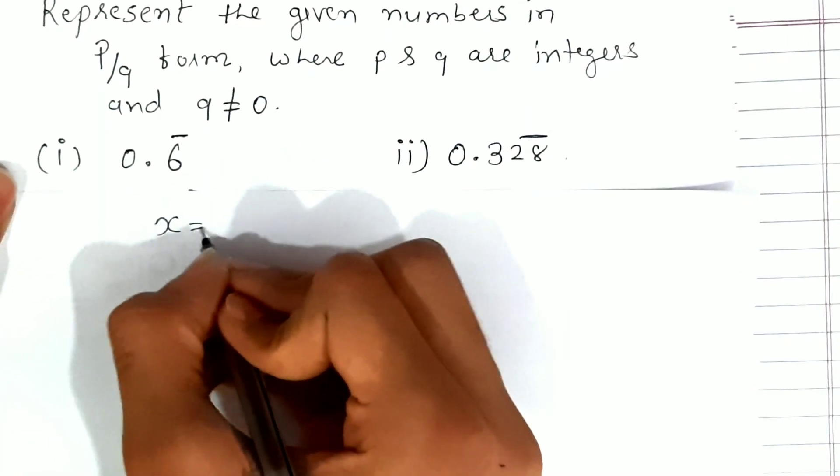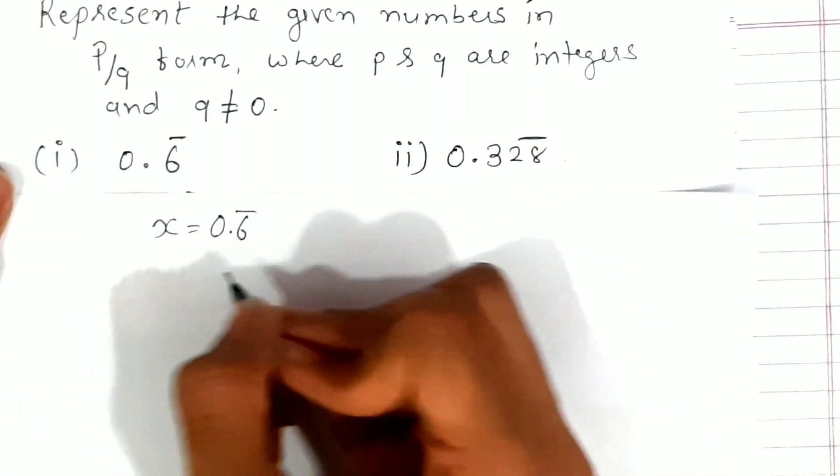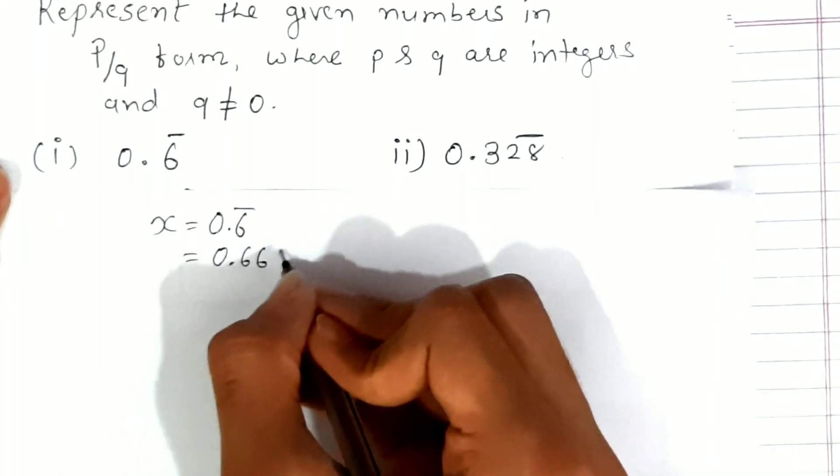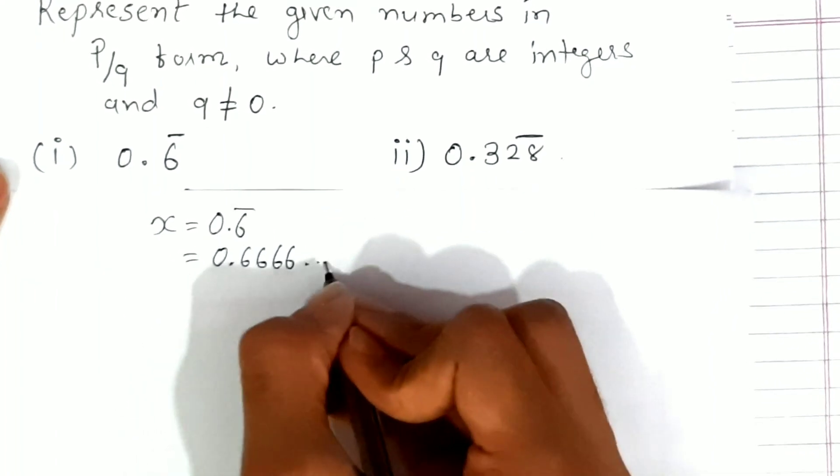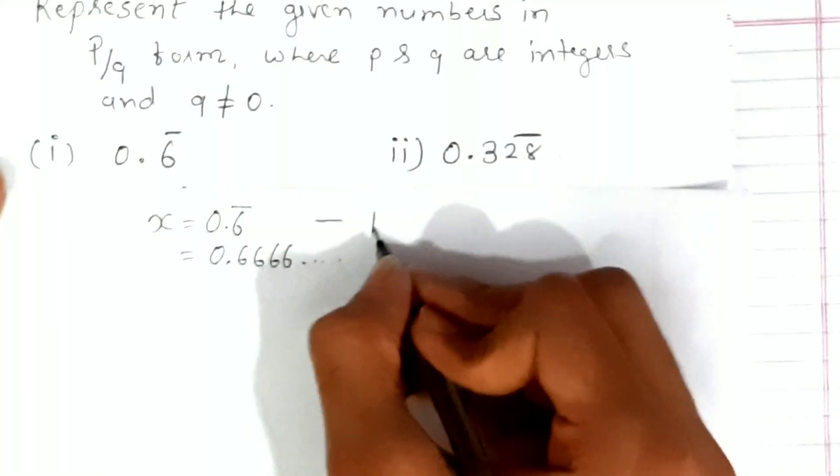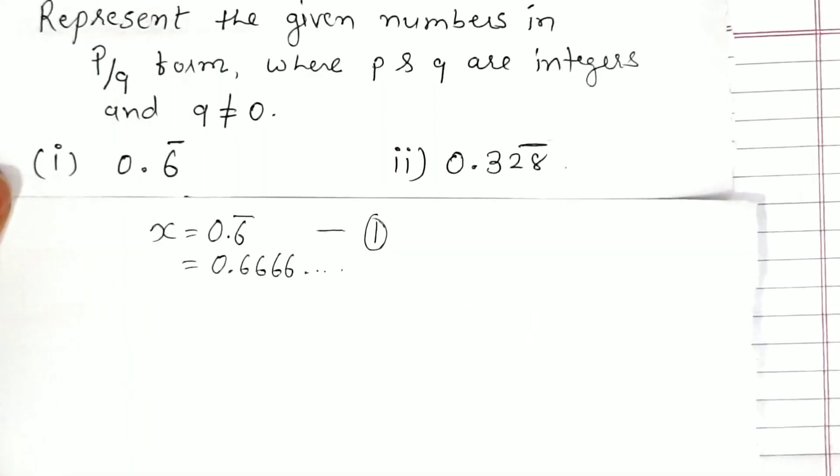So for the first example, we have 0.6̄. We'll take x = 0.6̄, which we can also write as 0.6666... and so on. This is our equation 1.